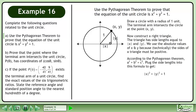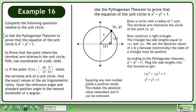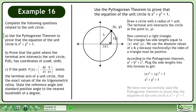According to the Pythagorean theorem, a squared plus b squared equals c squared. Plug the side lengths into this formula to get the absolute value of x squared plus the absolute value of y squared equals 1. Squaring any real number yields a positive result, making the absolute value redundant and it can be removed. We have now successfully used the Pythagorean theorem to prove that the equation of the unit circle is x squared plus y squared equals 1.